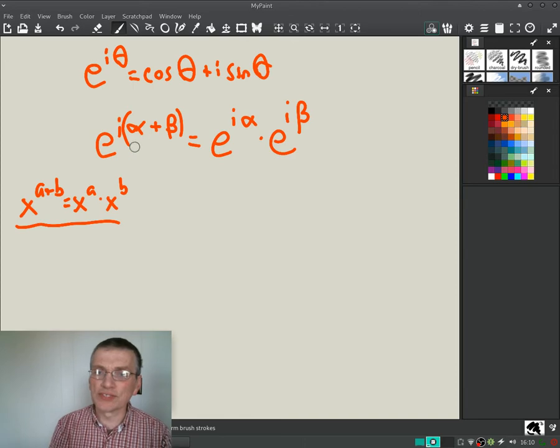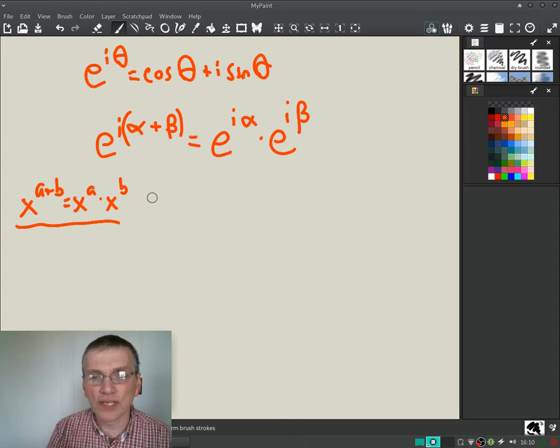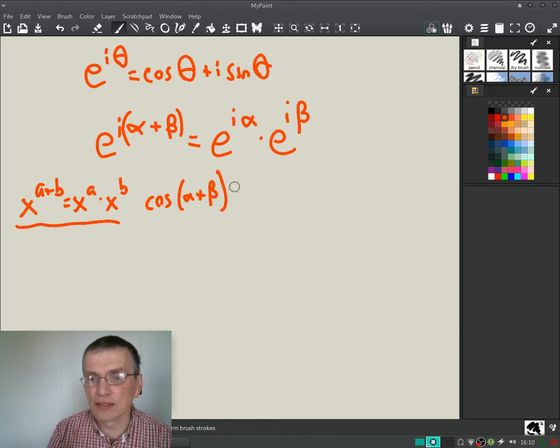Now we've set up our equation. We can put this thing back in there. So we get cosine of alpha plus beta plus i sine alpha plus beta.